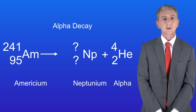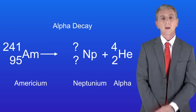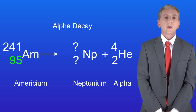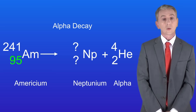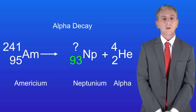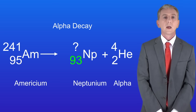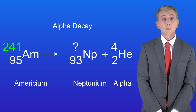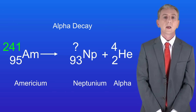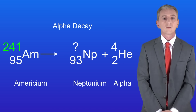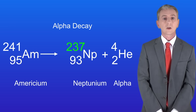The atomic number of americium is 95. The atomic number of an alpha particle is 2. Subtracting 2 from 95 gives us an atomic number of 93 for neptunium. The mass number of americium is 241 and the mass number of the alpha particle is 4. Subtracting 4 from 241 gives us a mass number of 237 for this isotope of neptunium.